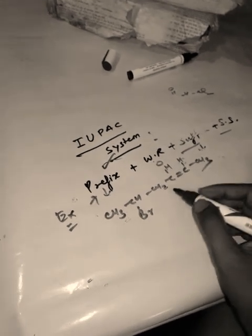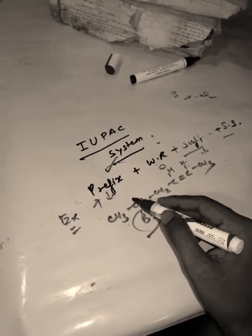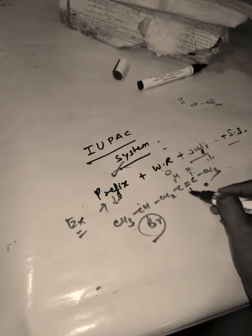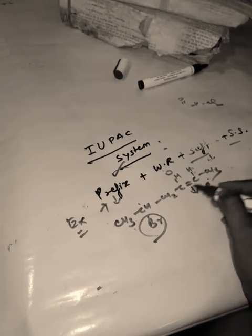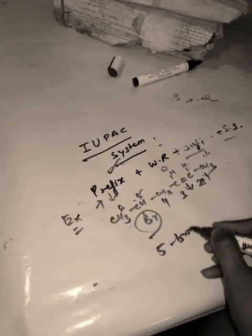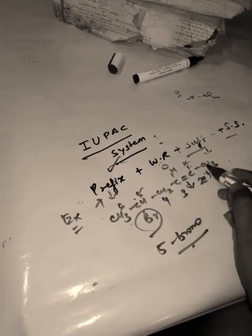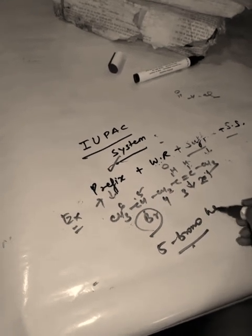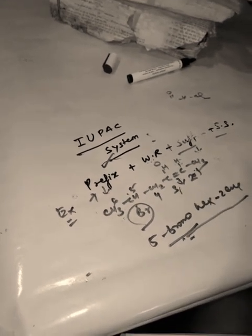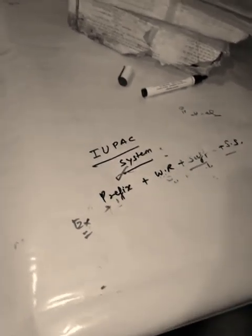Second example: a compound with a double bond and a bromo substituent. Since the double bond acts as a functional group, we count from that end: one, two, three, four, five, six. The bromo is at position five. Six carbons means the word root is 'hex'. Double bond gives '-ene'. So the name is 5-bromohex-2-ene. Priority is given to the double bond first, then the substituent.